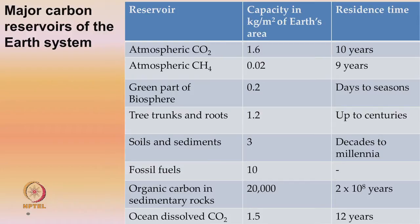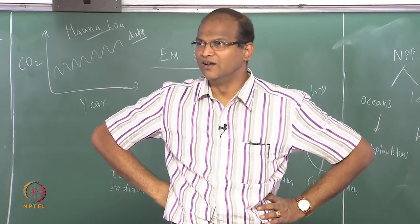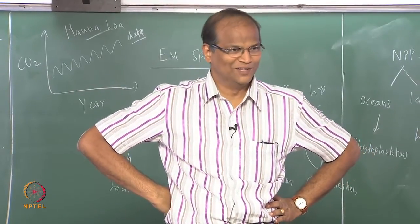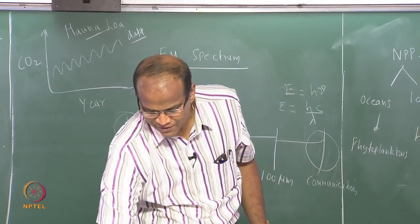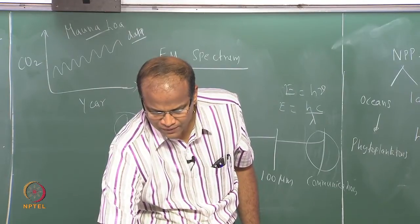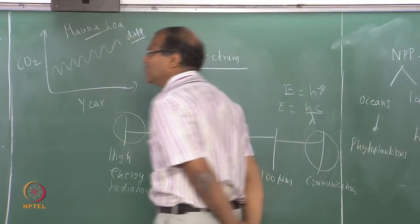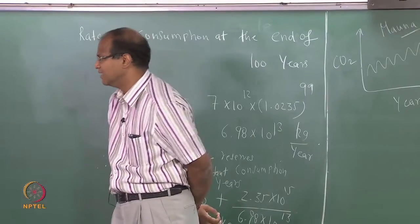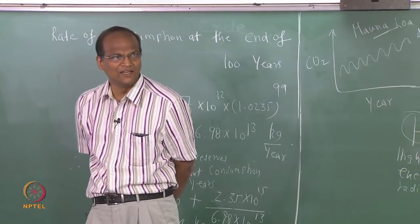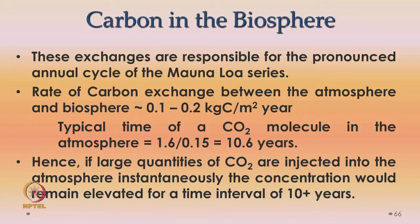Like that, it is possible to calculate the exchange rate for various reservoirs and find out the residence time. For example, if jet engine exhaust enters the stratosphere today — 22nd August 2014 — up to 2024 it will be there. The bad news is: if large quantities of carbon dioxide are injected into the atmosphere instantaneously, the concentration would remain elevated for a time interval of nearly 10 years. Whatever you have already injected will be there for 10 years, and as consumption keeps increasing you pump out more CO₂, creating more greenhouse effect — more emissions, more absorption, higher temperatures, more melting, decreased reflectivity — it has a positive feedback.